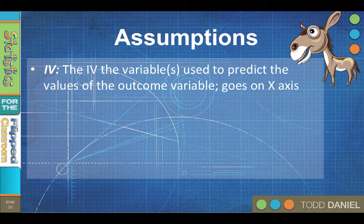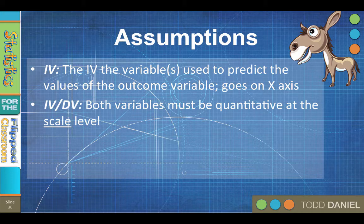However, we can also do multiple regression using multiple predictors. The independent variable always goes on the x-axis. The independent and dependent variables must both be quantitative at the scale level. Likert survey scales can be used if the questions had five or more item options. There are forms of regression that use categorical outcome variables, but for simple linear regression we will only use scale variables.